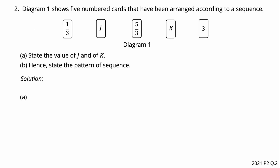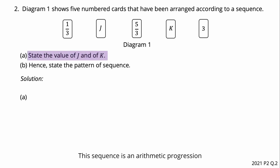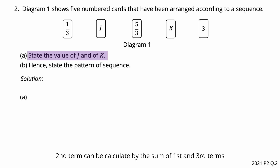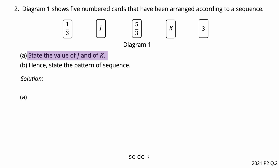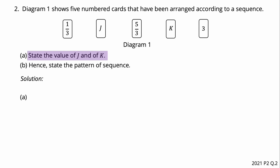Question number two: Diagram 1 shows five number cards arranged according to a sequence. The first, third, and fifth terms are given. The second term can be calculated as the sum of the first and third terms divided by 2. Similarly, we can find the values of j and k using arithmetic means.